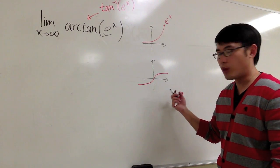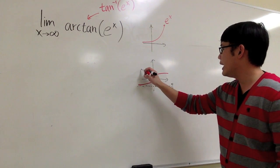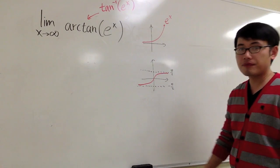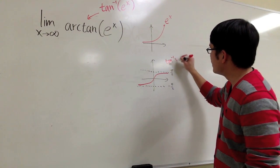And it has two horizontal asymptotes at negative pi over 2 and positive pi over 2. So this is for the inverse tangent of x.